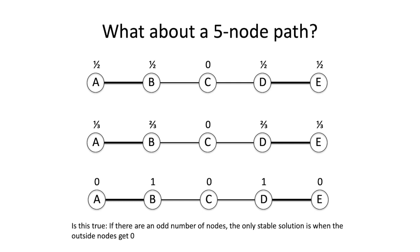In the five-node path, the B-C link needs to total one, otherwise C can offer B or D more and they'll both get a higher payoff. The same applies to the second option — C can offer more to B or D and get a higher payoff. The bottom-line stable solution interestingly happens when both B and D are getting one. There's a question: if there are an odd number of nodes, the only stable solution is when the outside node gets zero — we'll discuss that in lecture.